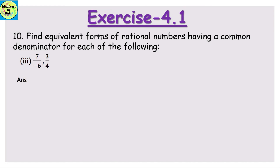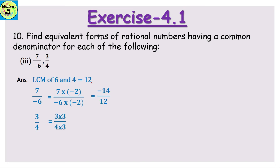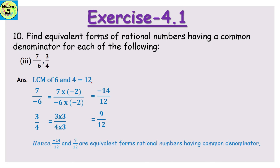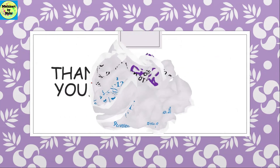Third part: 7/(-6) and 3/4. The LCM of 6 and 4 is 12. When there is a negative denominator, we take the absolute value (positive 6) for finding the LCM. Converting 7/(-6): multiply by -2 to get -14/12. Converting 3/4: multiply by 3 to get 9/12. So -14/12 and 9/12 are the equivalent forms of these rational numbers having the common denominator.